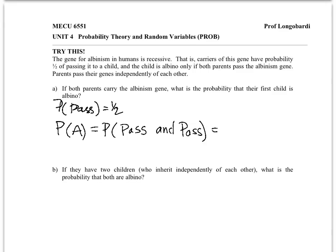This is equal to the probability that the first parent passes and the other parent passes. And so because of our rule of independence, we can simply translate 'and' into multiplication. Remember, that's only because we're told that genes are passed independently. So the probability that the first child is albino will be one half times one half, which is 25% or a quarter.